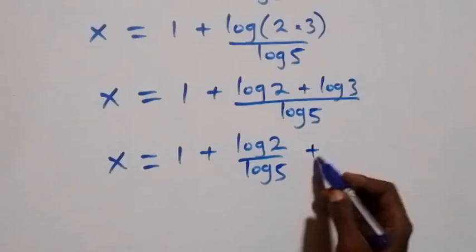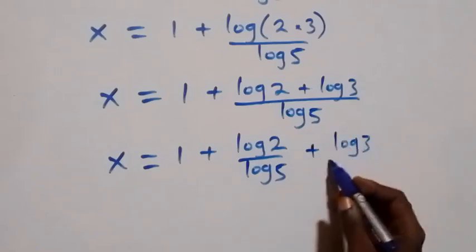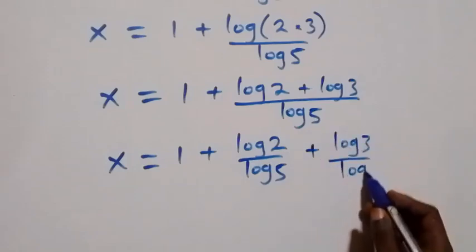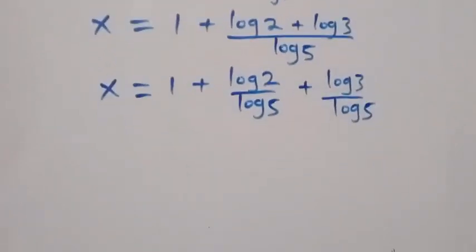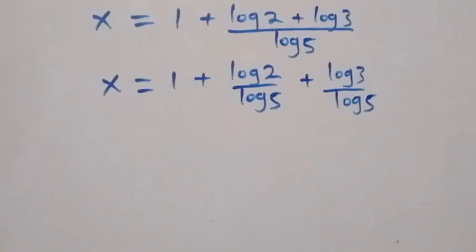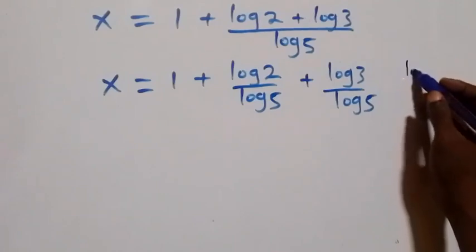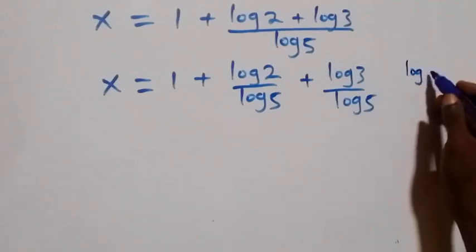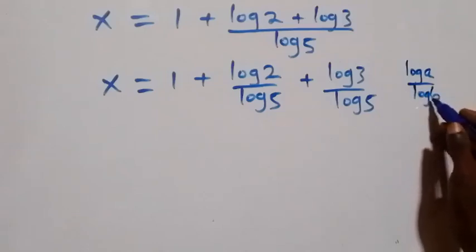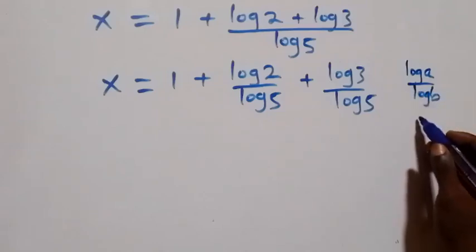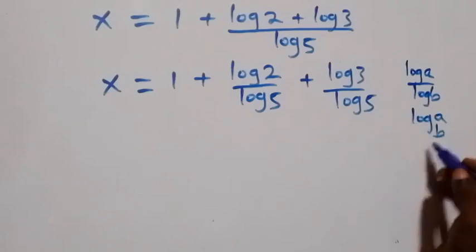Plus log 3 over log 5. Then from what we have here, applying the change of base rule, where log a over log b can be written as log a to base b.